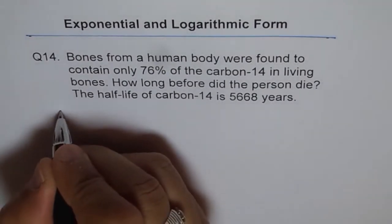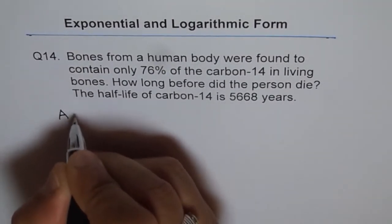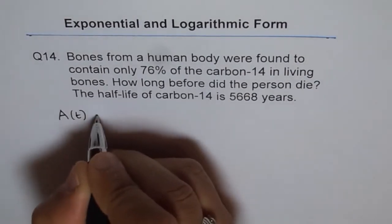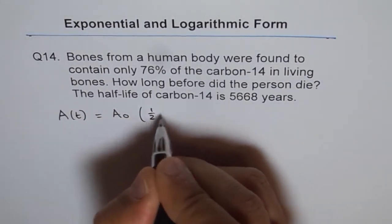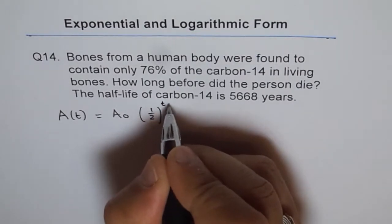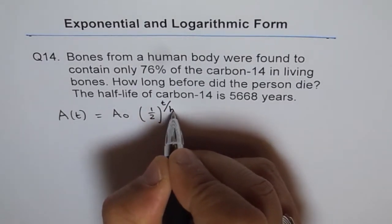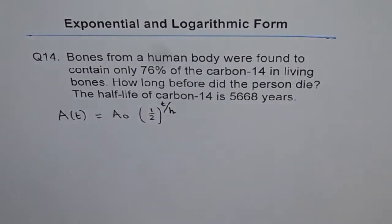The half-life formula is: amount of carbon left in the bone, A(t), which equals initial amount times half to the power of T over half-life. That is the formula for this particular application.